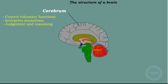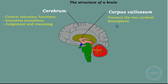The next part is the corpus callosum. The corpus callosum is the middle part of the brain. Its function is to connect the two cerebral hemispheres. Since the cerebrum is divided into two hemispheres, the corpus callosum connects them. We must know its function and be able to label it.